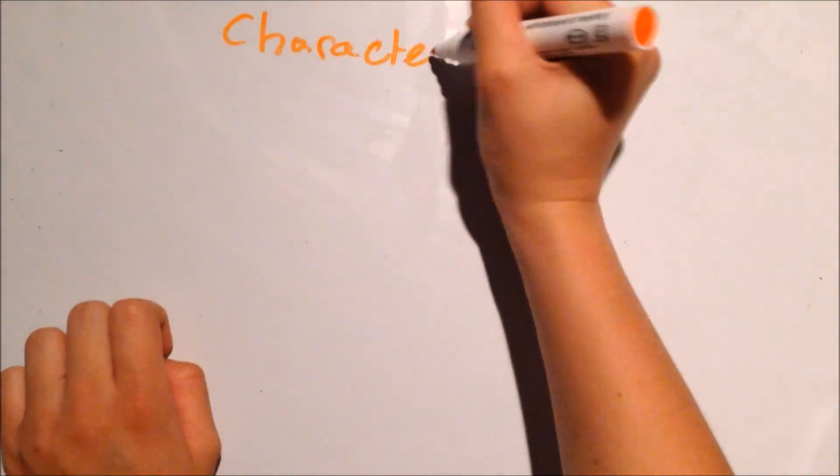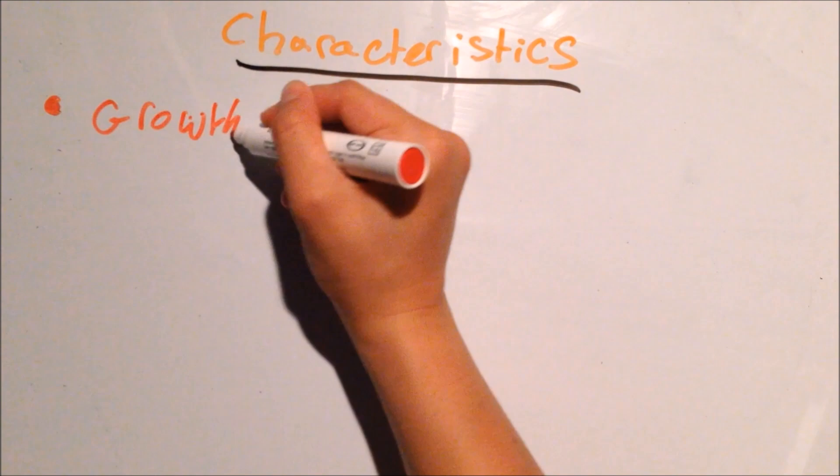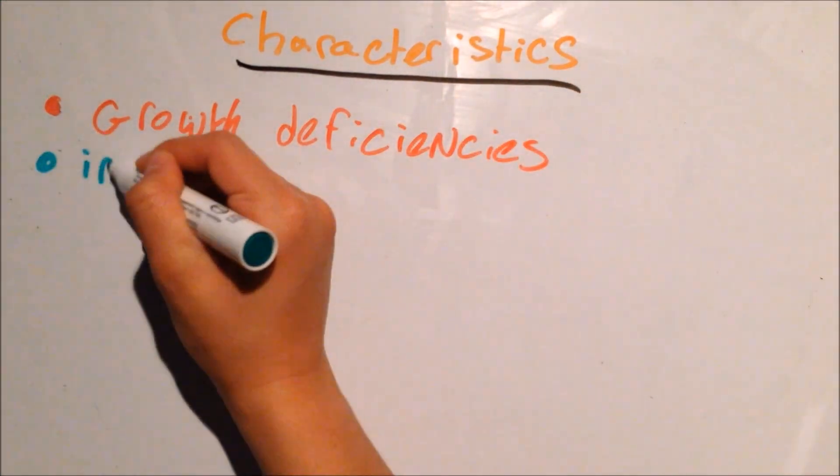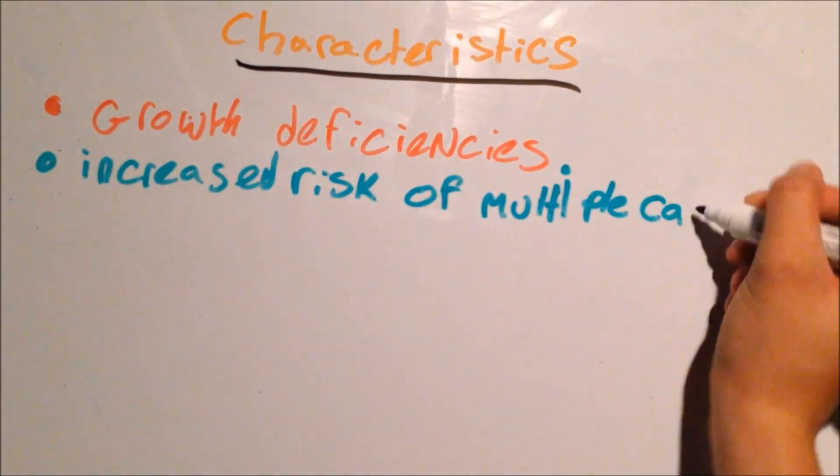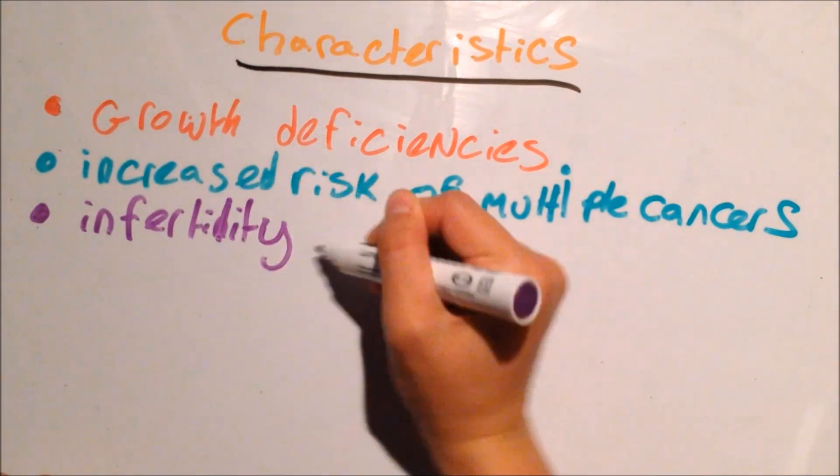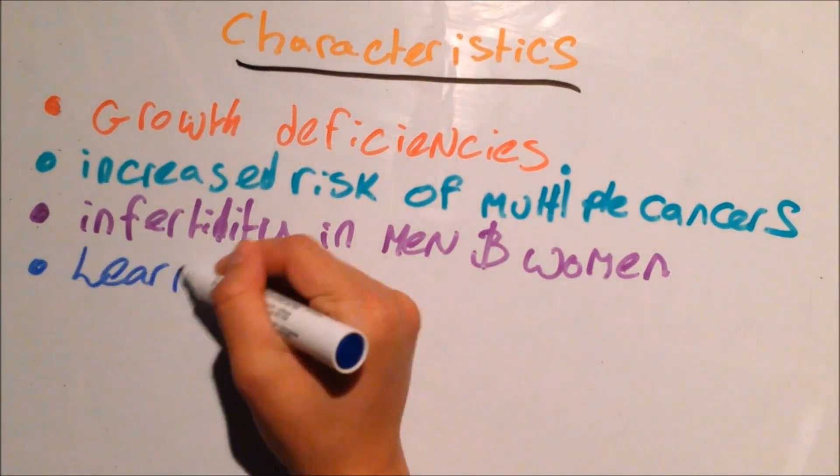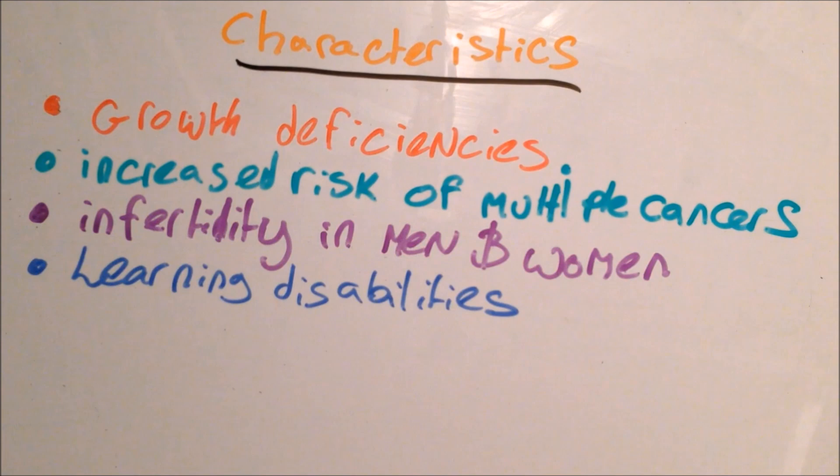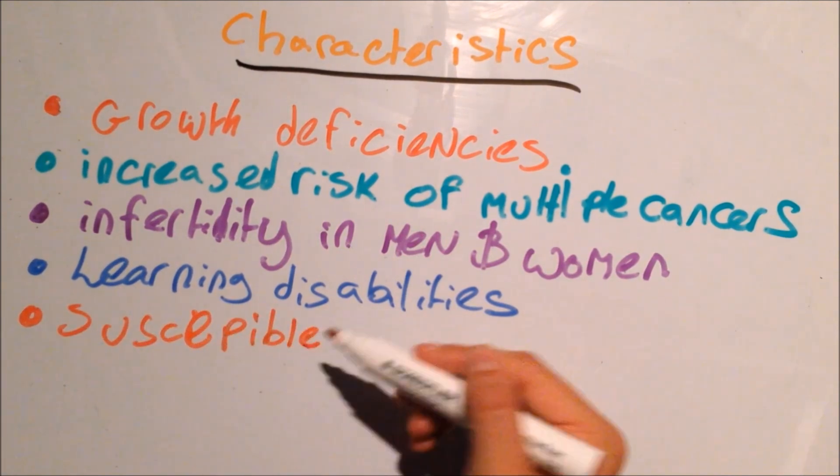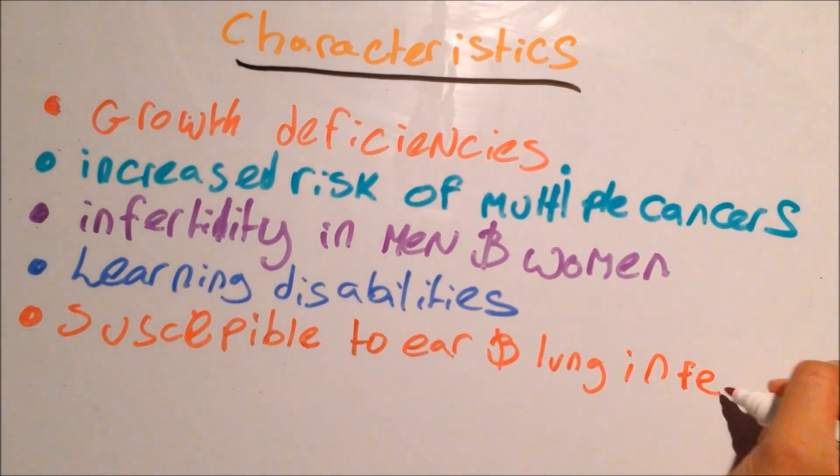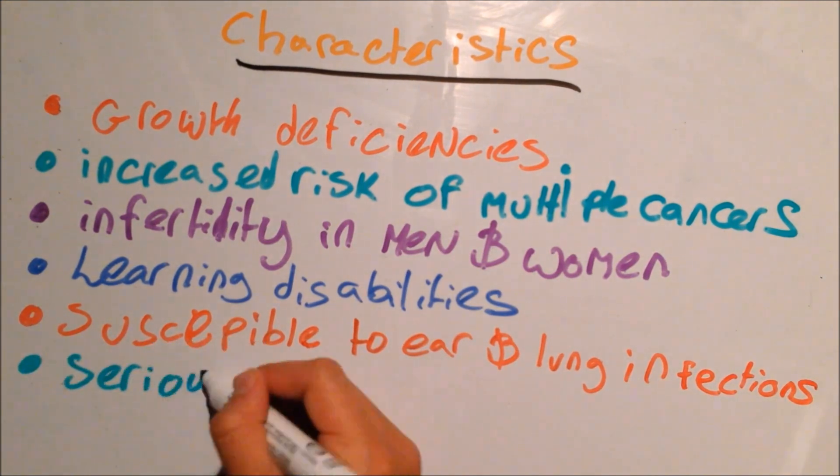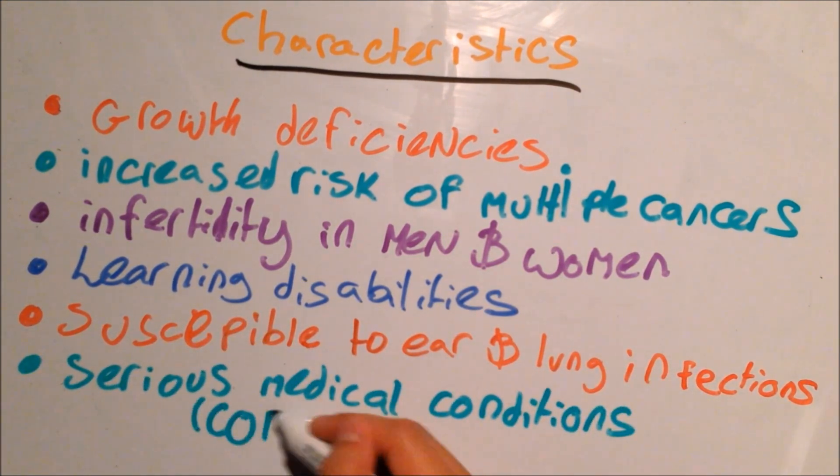Symptoms of Bloom Syndrome and Treatment. Bloom Syndrome has many characteristics such as growth deficiencies, increased risk of multiple cancer, infertility in both males and females, learning disabilities, susceptibility to ear and lung infections, and other serious medical conditions that can turn up at a young age.